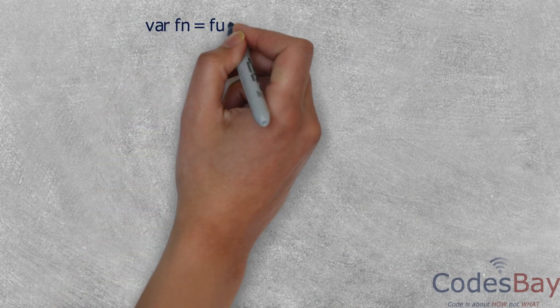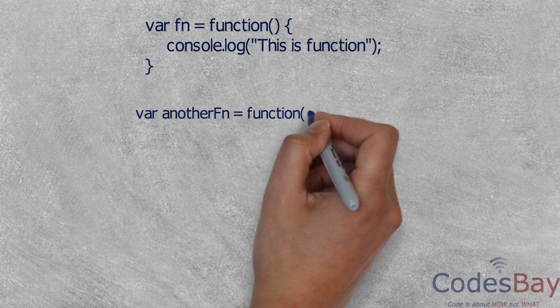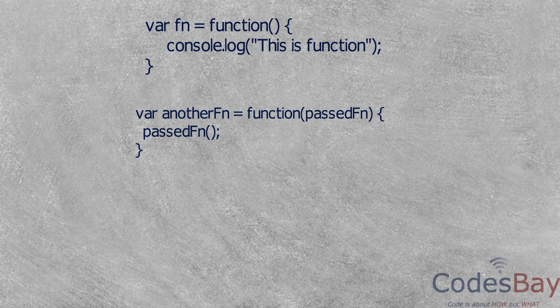For example, consider this function fn. I will create another function and take this function fn as an argument just like variables. No special action needs to be done to pass a function on to a function.